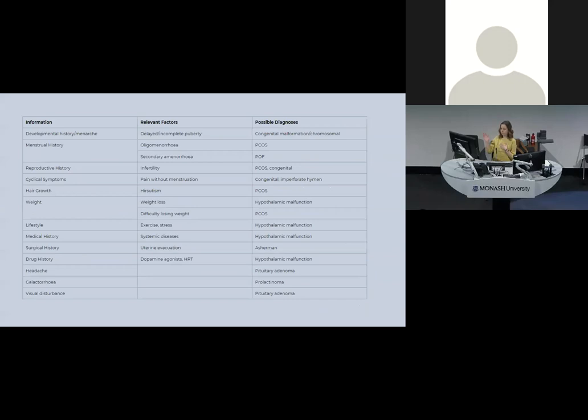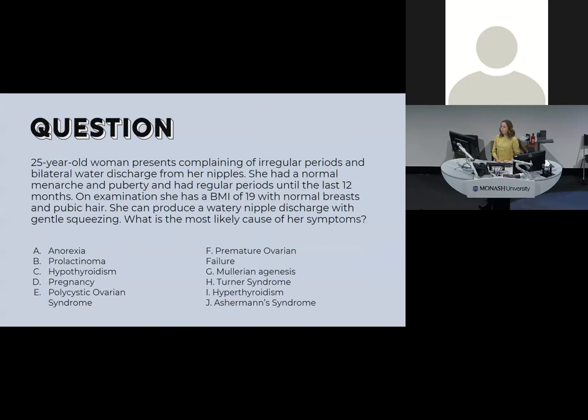Amenorrhea MCQ: a 25-year-old woman with irregular periods and bilateral watery discharge from her nipples, normal menarche and puberty, regular periods until the last 12 months, BMI of 19, normal breasts and pubic hair, and she can produce the discharge by squeezing. The most likely cause is a prolactinoma — that will be the typical presentation they give you.